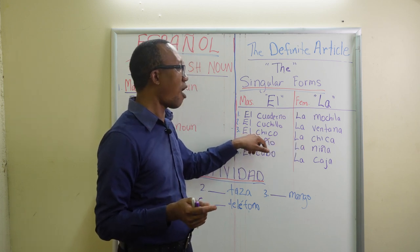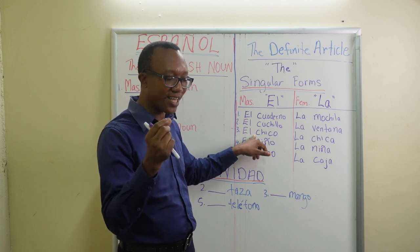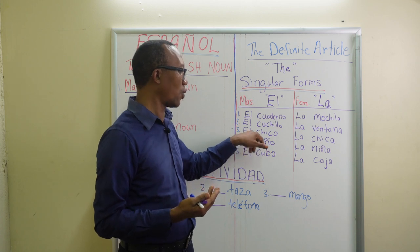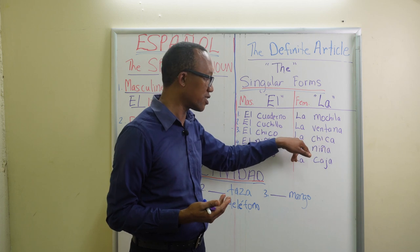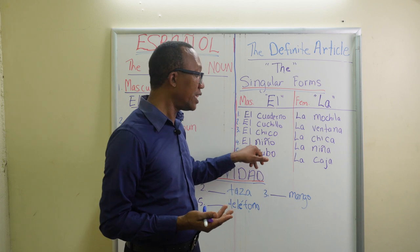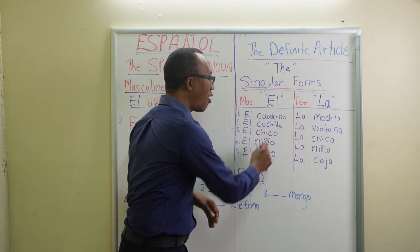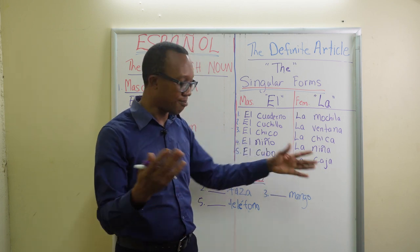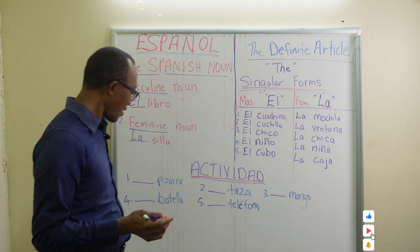La mochila — backpack/bag. La ventana — window. La chica — girl, just like we have 'el chico' for boy. So you convert 'el' to 'la' and the 'o' to 'a': chico becomes chica, el niño becomes la niña — remember the tilde above the 'n.' And la caja — box.